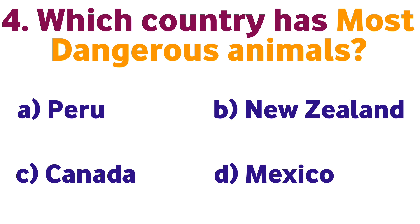Question number four: Which country has the most dangerous animals? Option A: Peru, B: New Zealand, C: Canada, D: Mexico. Correct answer is D: Mexico.